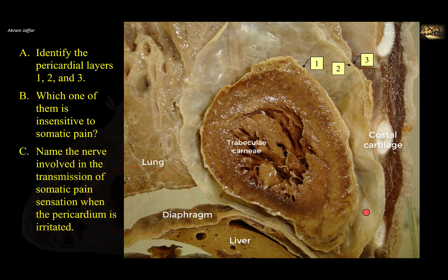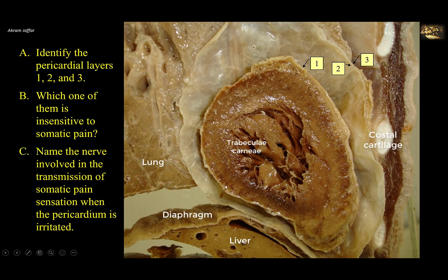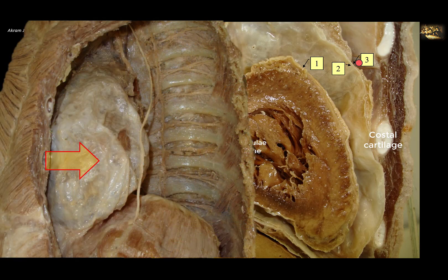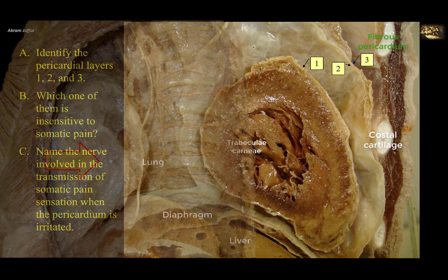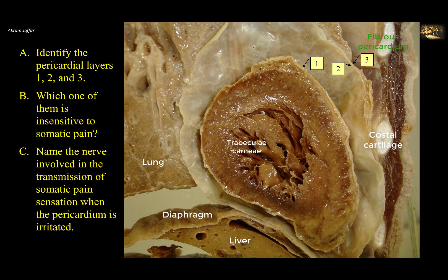The heart is surrounded by the pericardium and pericardial cavity. The pericardium is a fibrous serous sac consisting of a fibrous pericardium, labeled 3 — the strong outer layer that anchors the heart and is attached to the thoracic wall by sternopericardial ligaments. Inside the fibrous pericardium is a serous pericardium which, like other serous membranes such as peritoneum and pleura, consists of two layers: a parietal serous layer, labeled 2, and a visceral serous pericardium, labeled 1, which covers and is directly applied to the heart.